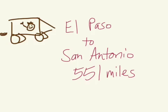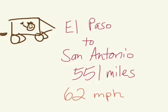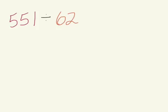Yikes! That's a long drive. Gavin's parents are taking turns driving, obeying the speed limit, traveling at 62 miles per hour — MPH means miles per hour. So how long can Gavin expect to sit in the van? Well, we've got a division problem: 551 miles divided into 62-mile groups. Every hour they travel 62 miles, so we have 551 divided by 62.